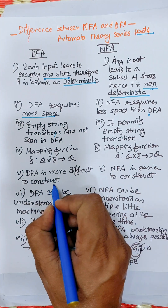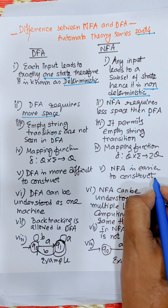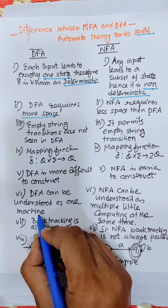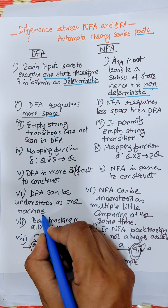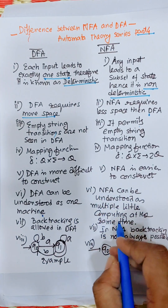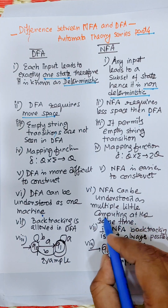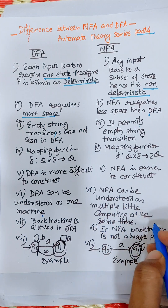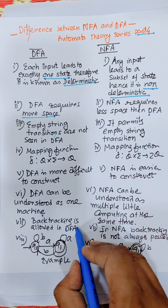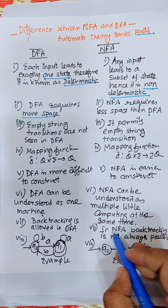DFA is more difficult to construct, while NFA is easier to construct. DFA can be understood as a single machine — only one machine — but NFA can be considered as multiple little machines computing at the same time.